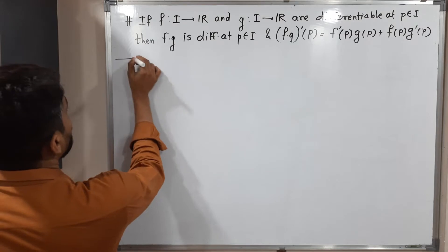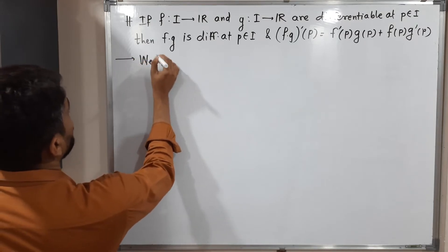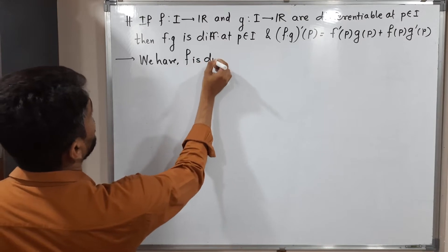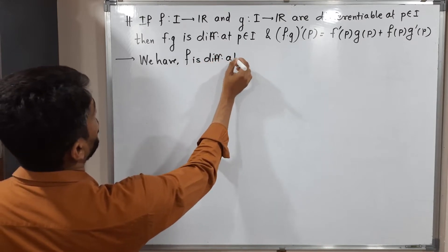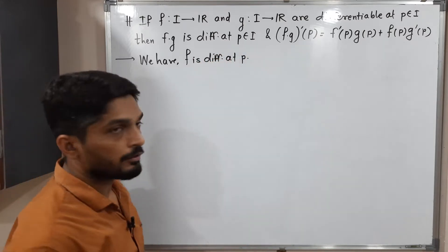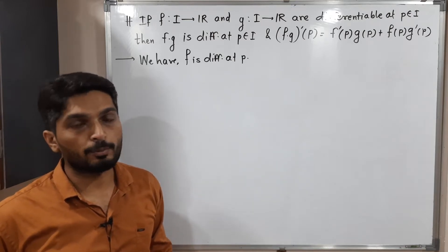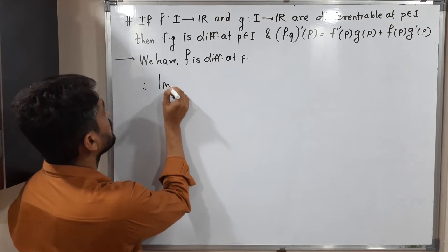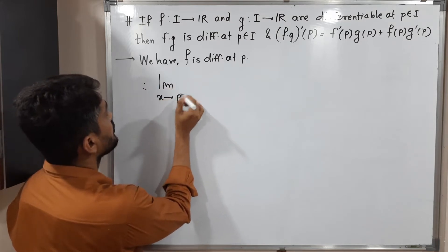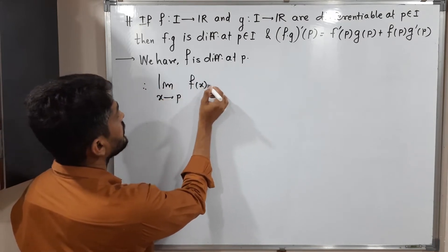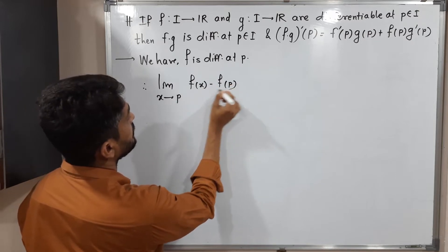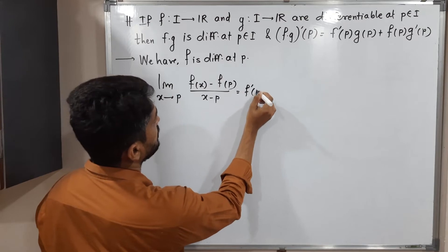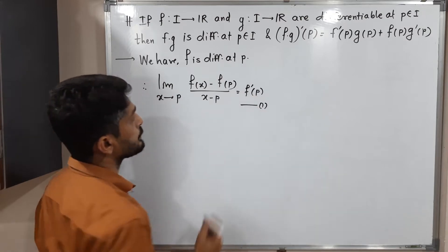The first given information: f is differentiable at point p. By definition of differentiability, we can write: limit x tends to p of [f(x) minus f(p)] upon [x minus p] equals f dash of p. I am calling this equation number one.